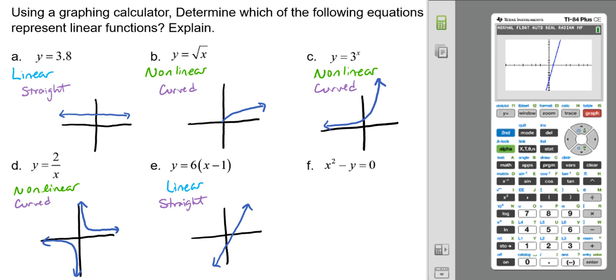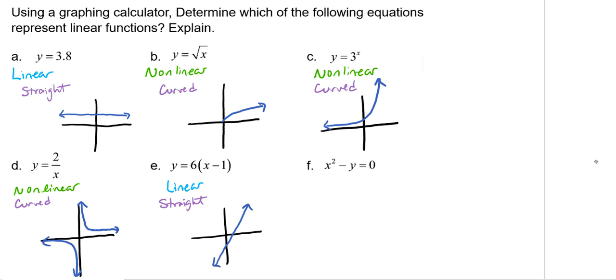Let's go ahead and do letter F, our last one. So we'll go y equals, we'll clear out what's in there. Now this time, we actually have to get our y by itself first so that we can plug it in. So what we're going to need to do is to move over our y. So that way we've got y equals x squared.